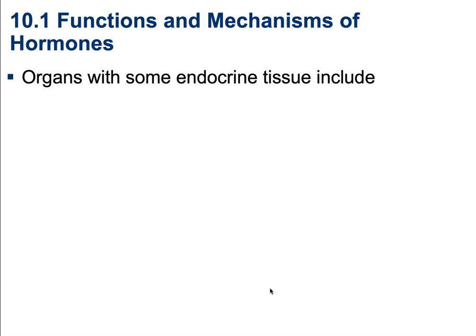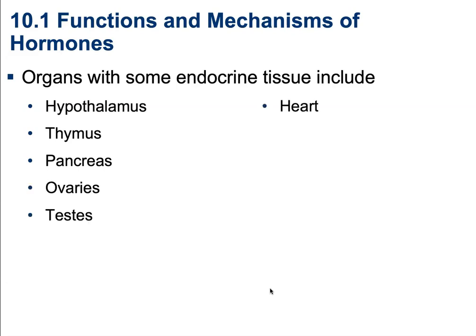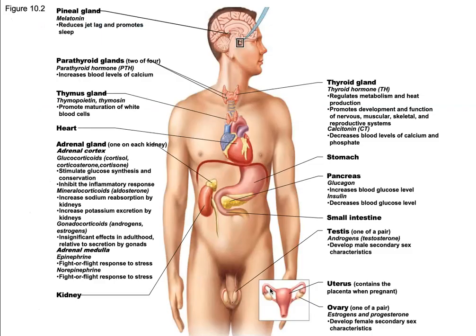Organs with some endocrine tissue include the hypothalamus, thymus, pancreas, ovaries, testes, heart, placenta, stomach, small intestine, and kidneys. This diagram shows where all of these are located. I do want you to spend a little bit of time looking at figure 10.2 — come back to this at the end of the chapter. You'll see where all of these different hormones are located and what their purposes and functions are, making it a great way to summarize everything you'll learn in this chapter.